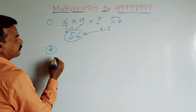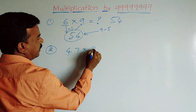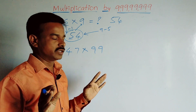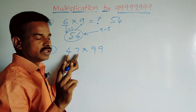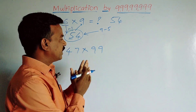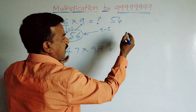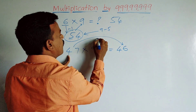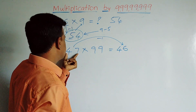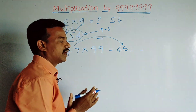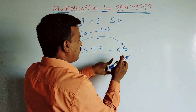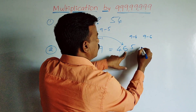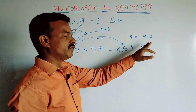One more example: 47 × 99. First examine: number of digits in multiplicand is 2, number of nines in multiplier is 2. So we can apply this trick. Subtract 1 from 47: 47 minus 1 equals 46 — that gives us 2 digits. Then for the remaining 2 digits: 9 minus 4 equals 5, and 9 minus 6 equals 3. So the answer is 4653.